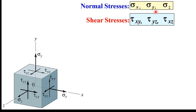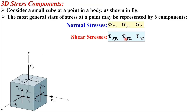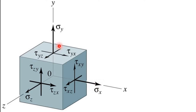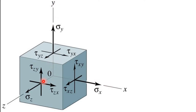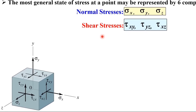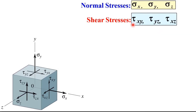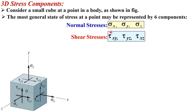Normal stresses are sigma x, sigma y, and sigma z, as you can see in this figure. All three normal stresses are in the x, y, and z directions respectively. And the three shear stresses are tau xy, tau yz, and tau xz. Keep in mind there are basically six components of 3D stress: three normal stresses and three shear stresses.